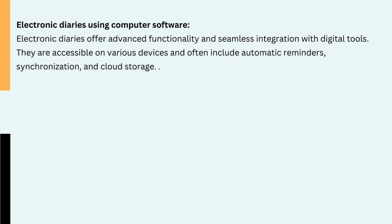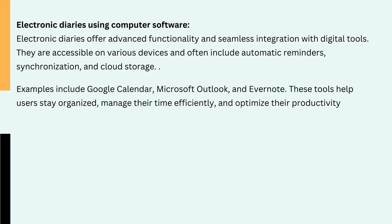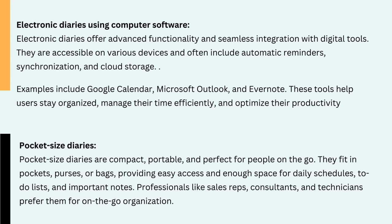4. Electronic diaries using computer software. Electronic diaries offer advanced functionality and seamless integration with digital tools. They are accessible on various devices and often include automatic reminders, synchronization and cloud storage. Examples include Google Calendar, Microsoft Outlook and Evernote. These tools help users stay organized, manage their time efficiently and optimize their productivity. 5. Pocket-sized diaries. Pocket-sized diaries are compact, portable and perfect for people on the go. They fit in pockets, purses or bags, providing easy access and enough space for daily schedules, to-do lists and important notes. Professionals like sales representatives, consultants and technicians prefer them for on-the-go organization.